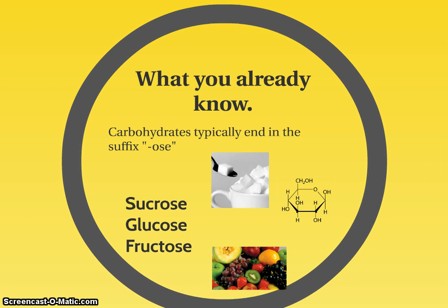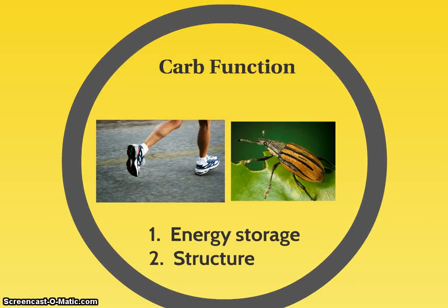Carbohydrates typically end in the suffix -ose. Sucrose is table sugar, glucose is our blood sugar, and fructose is the sugar that makes fruits taste so good. What do carbs do for us? Mainly they store energy, and structurally they can form different things. For example, the exoskeleton of insects is made of a carbohydrate called chitin. Those are the main functions of carbohydrates.